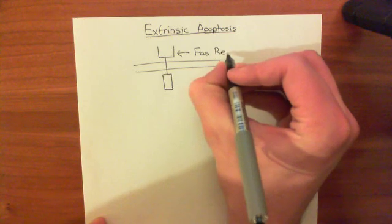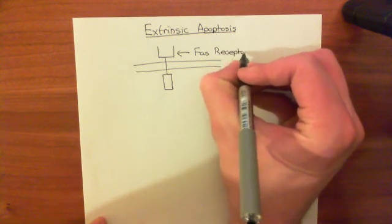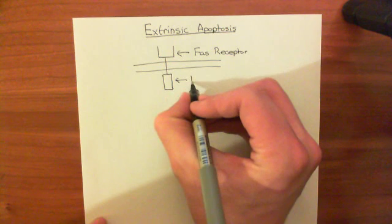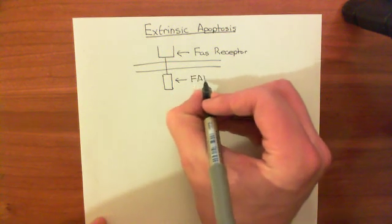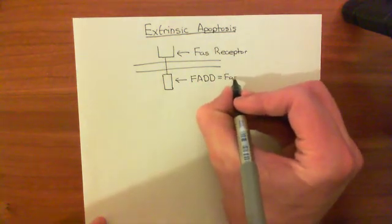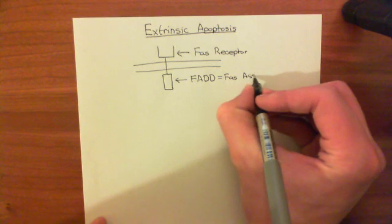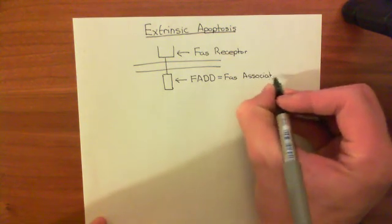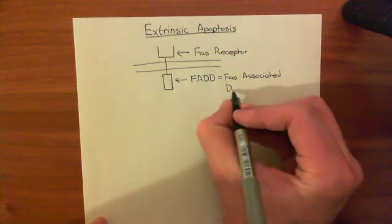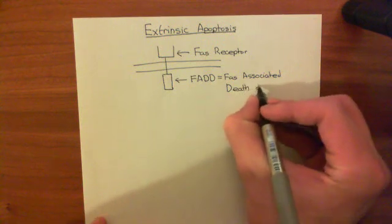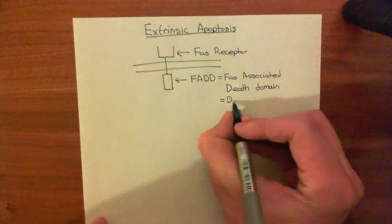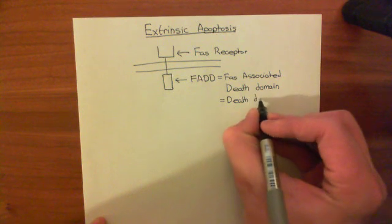This internal domain is what is known as the FAS-associated death domain, or just the death domain, often abbreviated to FADD — FAS-associated death domain. There are a lot of death domains and death effector domains in this pathway, so apologies for the terminology. If you hear people calling it the death domain, that's what they're talking about.